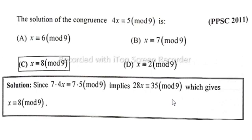This gives x ≡ 8 (mod 9). So option C is correct: x ≡ 8 (mod 9).